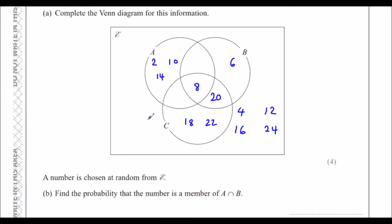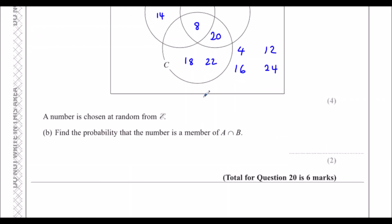A number is chosen at random from the Venn diagram. Find the probability that it's a member of both A and B. There's only one number in A and B — that's 8 — out of 12 even numbers in total. So the probability is 1 over 12.